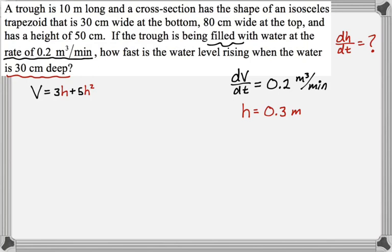All right, so I know what I'm going to eventually substitute in. I need to get a dH/dt in my equation somewhere, so I'm going to take a derivative. So dV/dt is going to be 3 dH/dt plus 10H dH/dt. So the 10 comes from 5 times 2.